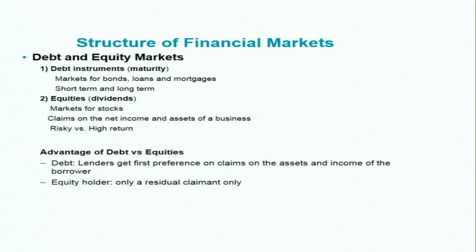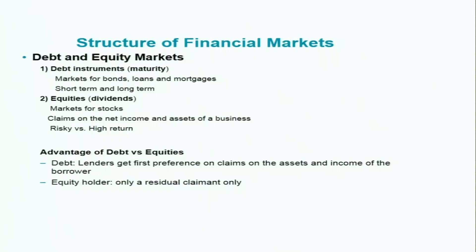Let us also see the advantages of debt and equities. In the case of debt, when you lend money to a corporation or government, the lender gets first preference on claims on the assets and income of the borrower. Only after that does the equity holder get a claim. So the equity holder is only a residual claimant — they have secondary claim after lenders.